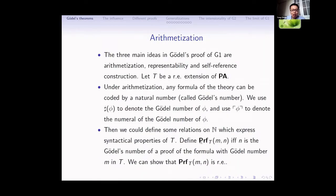Now I'll give a quick overview of the idea of the proof of Gödel's G1 — not about G2, because he didn't publish his proof of G2. The idea of Gödel's proof of G1 has three main components: arithmetization, representability, and self-reference construction.